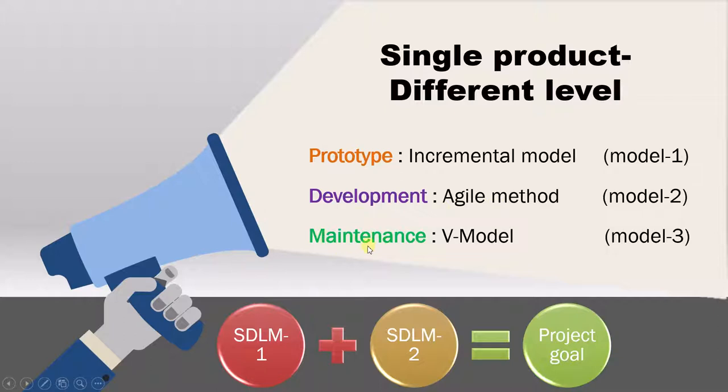But if the product is in the maintenance stage, like when the customer comes back with a defect and you have to correct it, then you use the V model. So as you can see, we use different software development lifecycle models to achieve the final project goal. We use incremental model for the prototype stage, agile method for the development stage, and the V model for the maintenance stage. So you have a single product and different decisions at different levels.